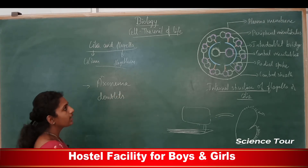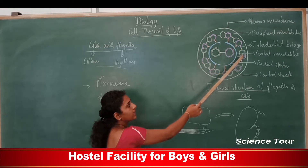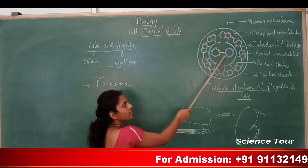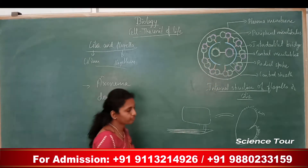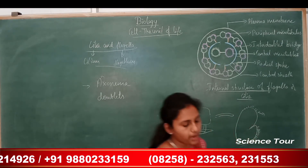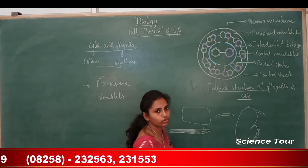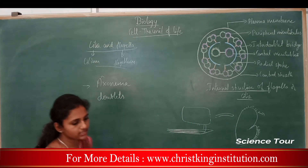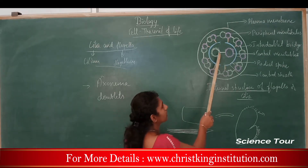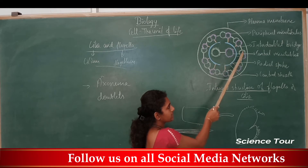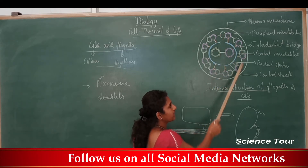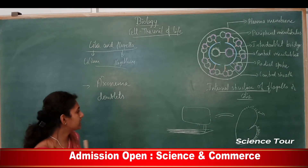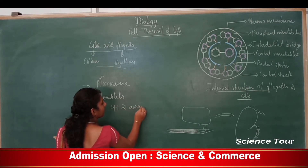Centrally, there are two microtubules. So the arrangement is nine peripheral doublets plus two central microtubules, called the 9+2 array. This arrangement of microtubules inside the flagellum is called the nine plus two array — very important.